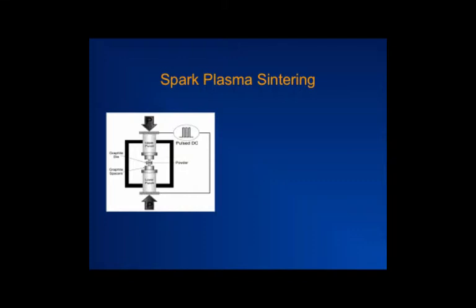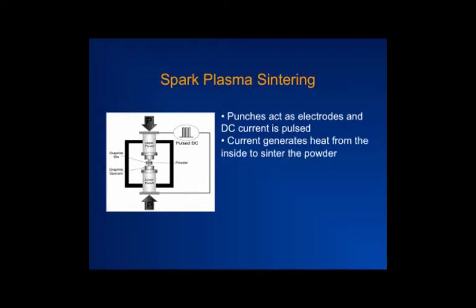When you go with pulsed DC heating, you deal with a process called spark plasma sintering. In this case, you fill the powder into a die just like before, and the die is graphite — an electrically conducting die — and you have a top punch and a bottom punch. The punches are connected through a pulsed DC, so you are resistively heating as you apply the pulsed heating going back and forth, you begin to generate heat — Joule effect — and you can now sinter the powder.